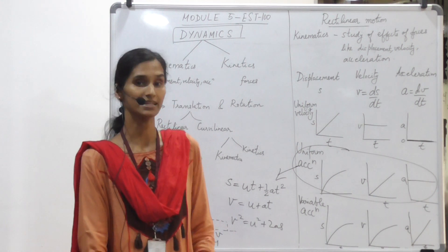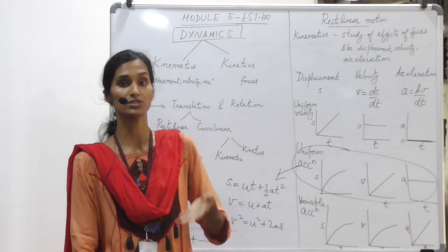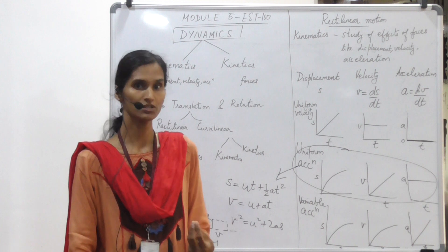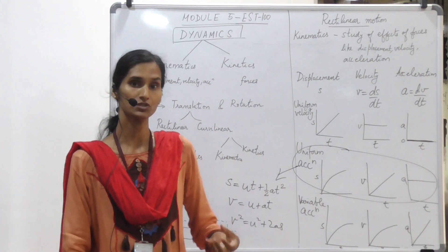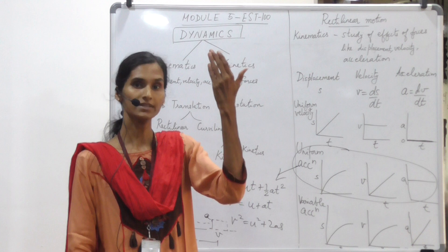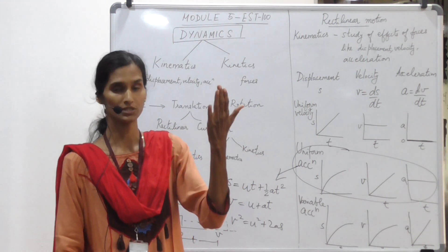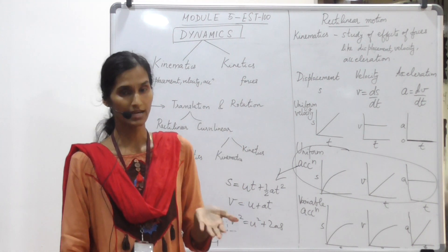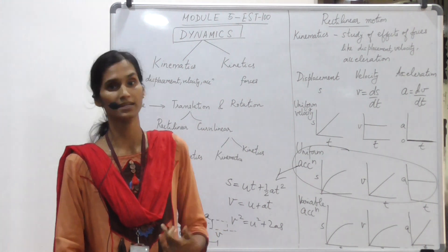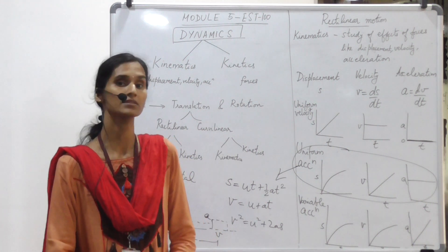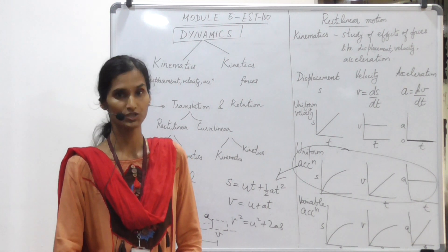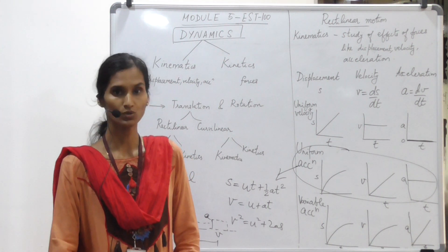In vertical motion cases we consider acceleration as the acceleration due to gravity, denoted by g. We consider g as negative when the object is thrown upward, because the object is decelerating — it is given an initial velocity, rises, and loses all its velocity at the maximum height. Therefore, upward movement is taken as minus g and downward movement as plus g. Now let us look at two cases.